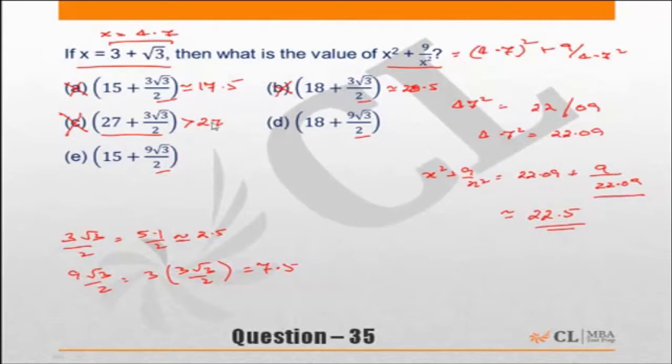Choice C we have already eliminated because this is greater than 22.5. It is greater than 27. Choice D: 18 plus 7.5. Remember this is 7.5. This is approximately 25.5. Incorrect.